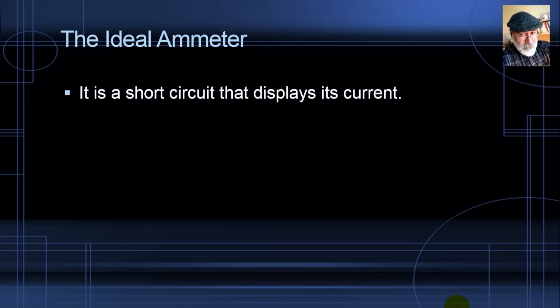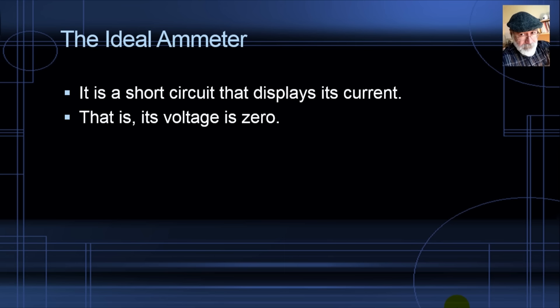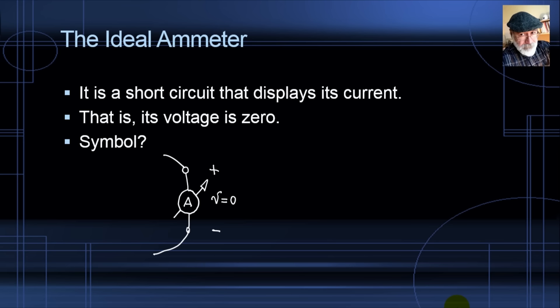The ideal ammeter is a short circuit that displays its current. Its voltage is zero because it's a short circuit. The symbol is an ideal ammeter connected between two nodes at a port, telling you what current flows through it — and the voltage across it is zero. A real ammeter has an internal resistance that is not quite zero, but it's very tiny — probably a few micro-ohms.